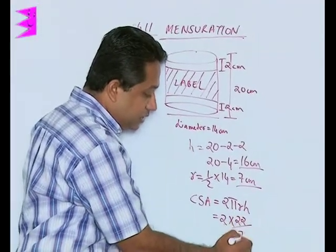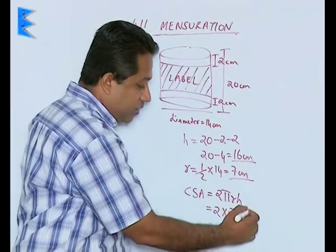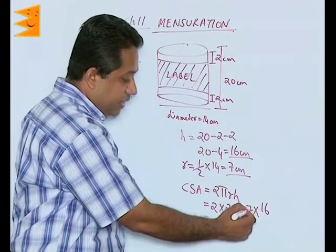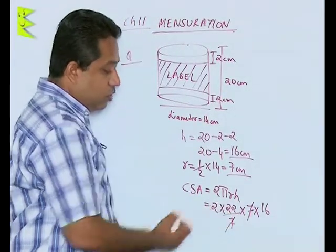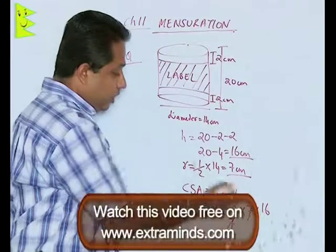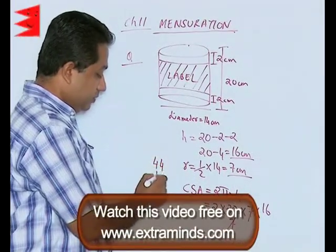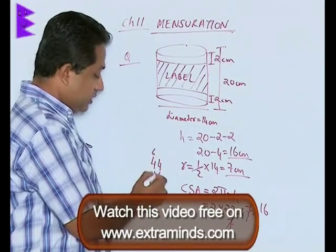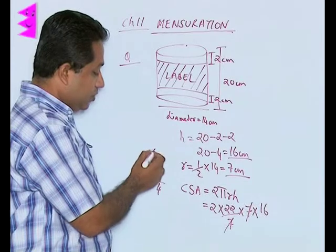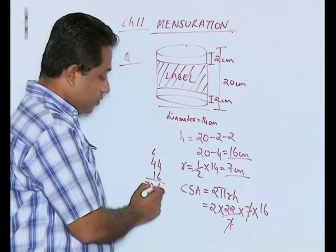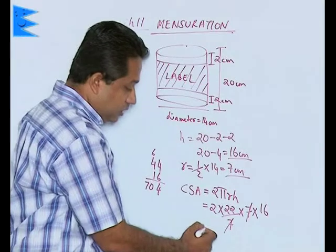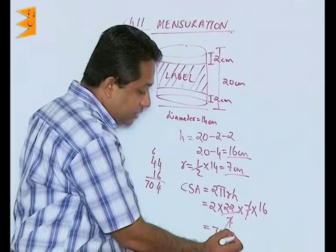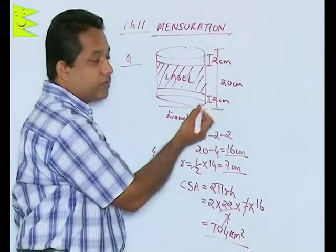Since there is no label on the top and bottom, curved surface area = 2πrh. That is 2 multiplied by 22/7, with radius 7 and height 16. The 7 cancels, giving 2 × 22 × 16 = 44 × 16. Calculating: 44 × 16 = 704. So the area of the label is 704 centimeters square.